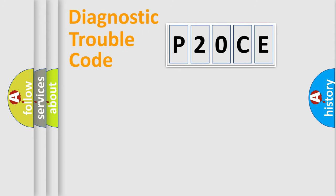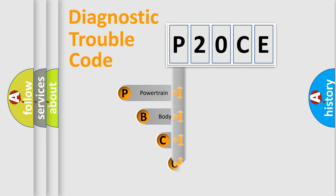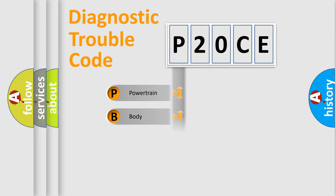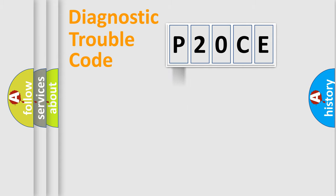Let's do this. First, let's look at the history of diagnostic fault code composition according to the OBD-II protocol, which is unified for all automakers since 2000. We divide the electric system of an automobile into four basic units: powertrain, body, chassis, and network.